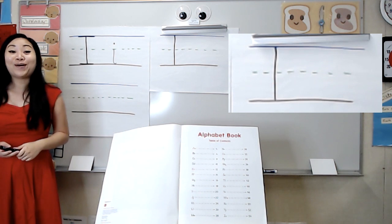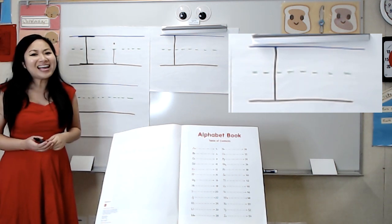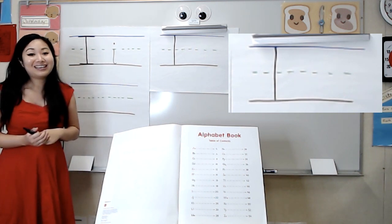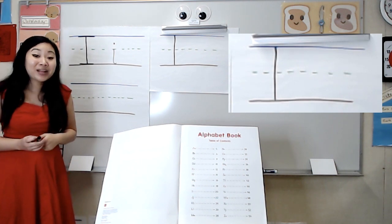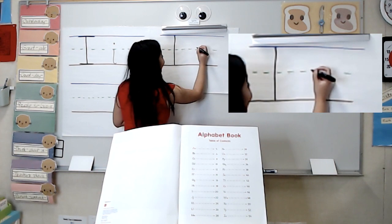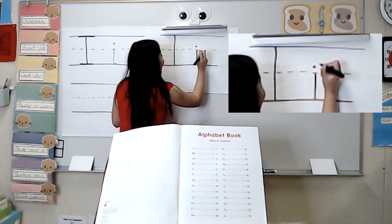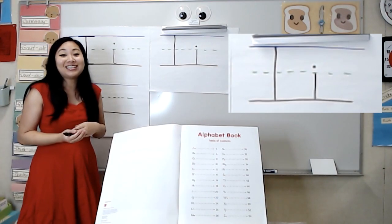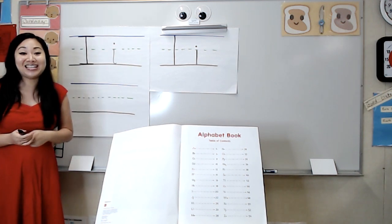Now let's look at lowercase i. What do you notice? It's a lot smaller and it has a little dot above the grass. I have to tell you another secret — sometimes people write the lowercase i like this, and it goes just straight down. And that's also correct. Miss G just likes to add the fancy little tail for her lowercase i.